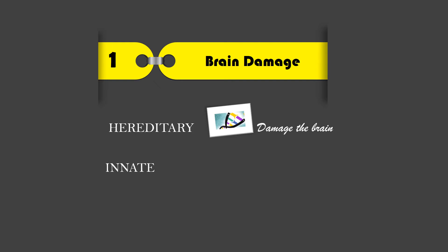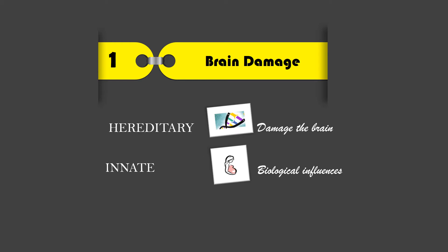The second one is innate, resulting from biological influences during the period of conception or pregnancy. And the third one is congenital, indicating that biological influences may have originated during the process of gestation or development in the prenatal, perinatal, or postnatal periods of development.